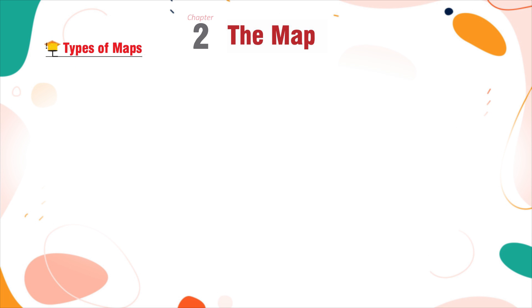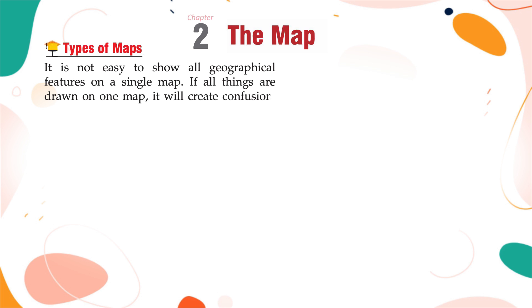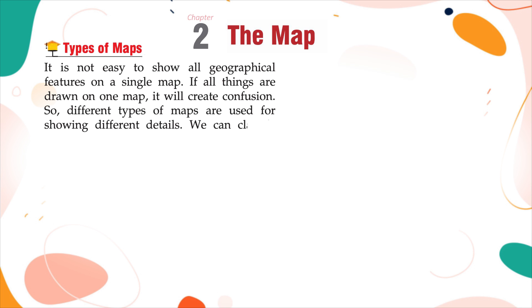Types of Maps. It is not easy to show all geographical features on a single map. If all things are drawn on one map, it will create confusion. So, different types of maps are used for showing different details.